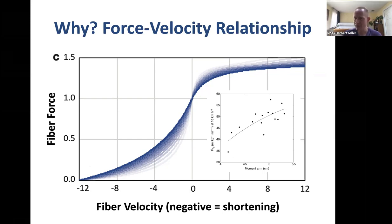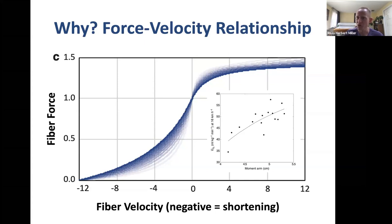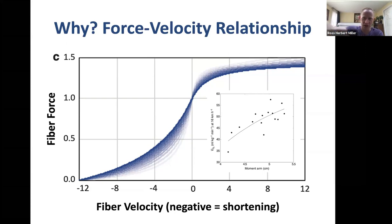This explains why distance runners may be better off with a short moment arm — it allows the muscle to operate at slower contraction velocities during fast joint motions. The concise summary: relatively short moment arms let us do fast joint motions without requiring fast muscle contractions. The closer the muscle is to the joint center, the slower it can contract for a given velocity of joint motion.